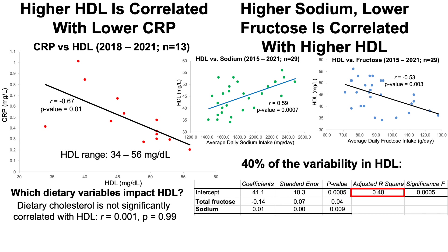Whereas univariate correlations are interesting, I combined those two variables and put them in a model to see how much of the variability in HDL a multivariate model including fructose and sodium could explain. Based on the adjusted R-squared, 40% of the variability in HDL can be explained by sodium and fructose data. That begs the question: what's the other 60% that explains the variability in HDL? I'll look further into that — stay tuned in later videos.